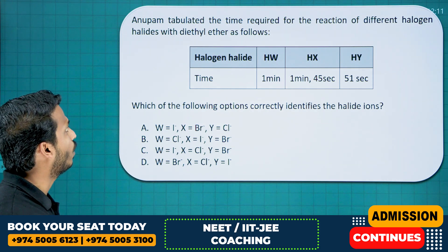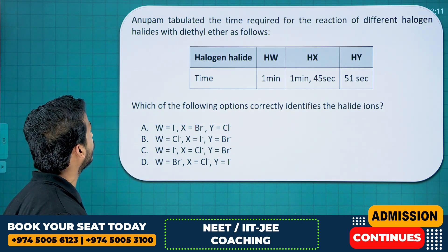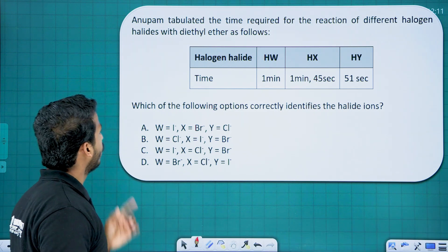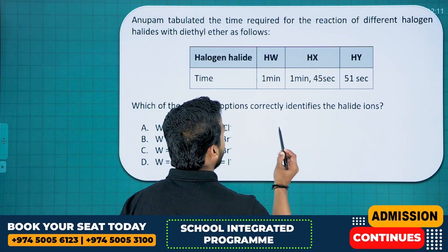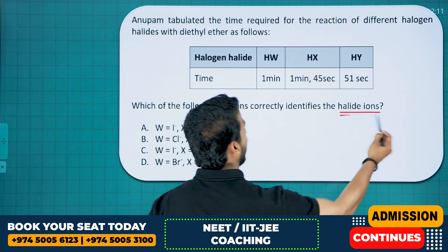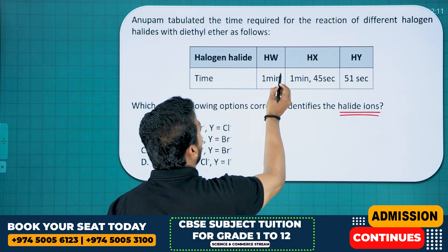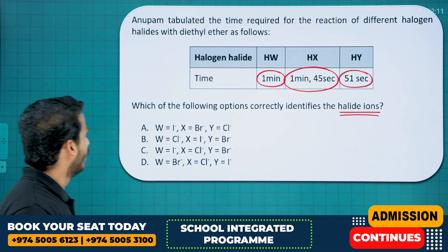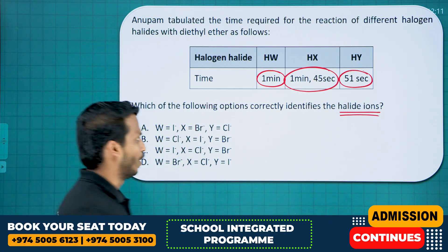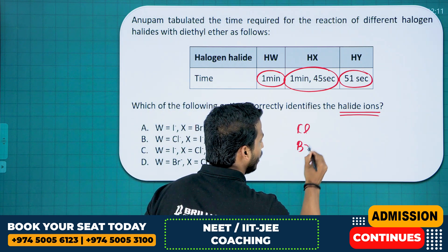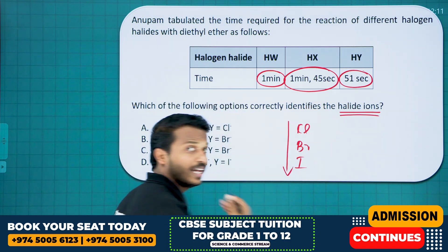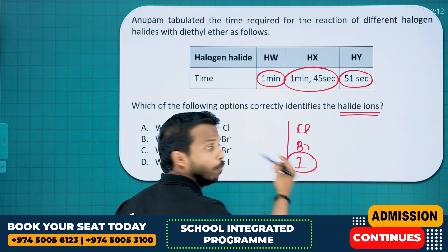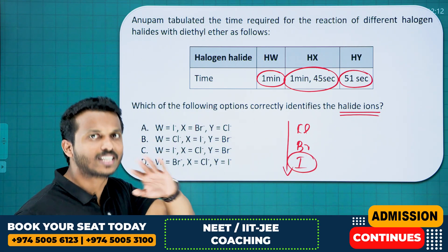Next: Anupam tabulated the time required for the reaction of different hydrogen halides with diethyl ether — that is our Williamson ether synthesis. Which option correctly identifies the halide ions? One reacts in 1 minute, one in 1 minute 45 seconds, and one in only 51 seconds. Whether it's iodine, bromine, or chlorine — down the group their reactivity increases, so iodine is the best leaving group and the most reactive, meaning very little time is needed.